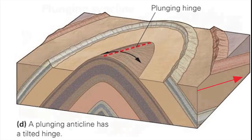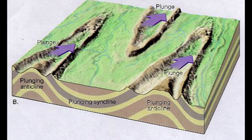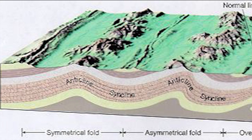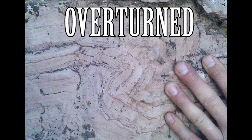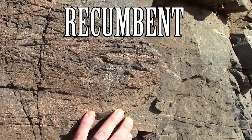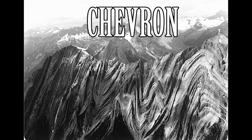With a plunging syncline, the V points in the opposite direction of plunge. But as with any other syncline, the youngest beds are in the center, and all flanking beds dip inward towards the center of symmetry. Besides level and plunging synclines and anticlines, we can further classify folds as being symmetrical or asymmetrical, isoclinal when the limbs parallel each other, overturned when one limb ends up upside down, similarly overturned recumbent when the fold axis is near horizontal, and chevron when they zigzag.